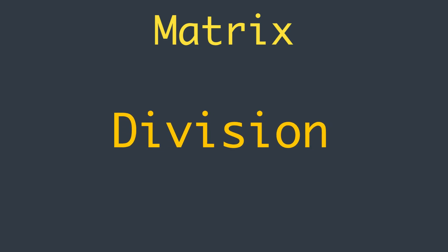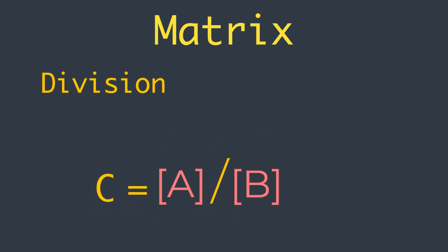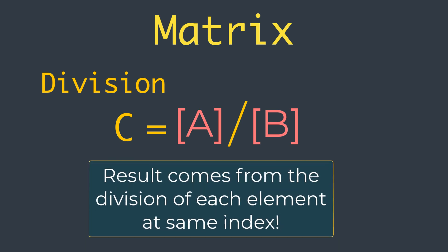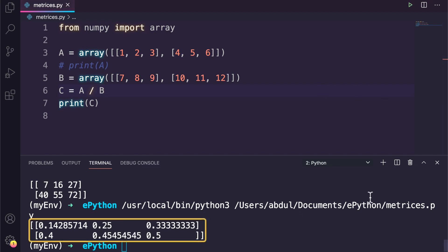The next operation is division. One matrix can be divided by another matrix with the same dimensions, such as C equal to A divided by B, where A and B are matrices with the same size. The scalar elements in the resulting matrix are calculated as the division of the elements in each of the matrices. We can implement this in Python using the division operator directly on the two NumPy arrays. In our previous example we simply change the operator from multiplication to division and it gives us the result.